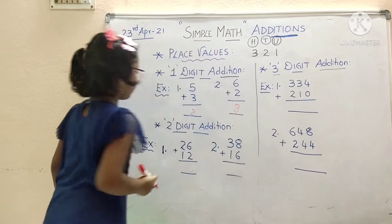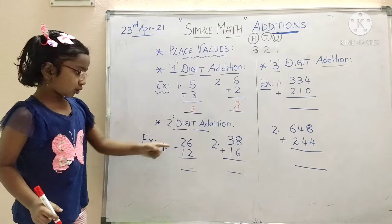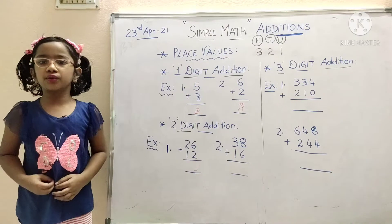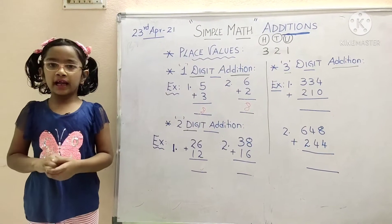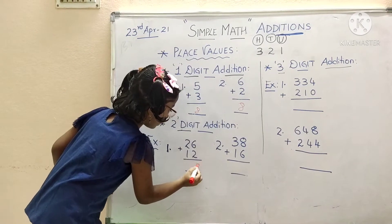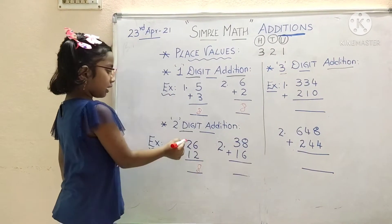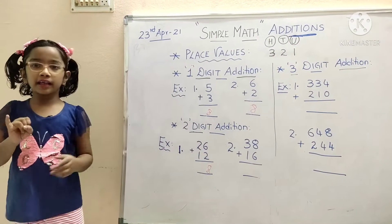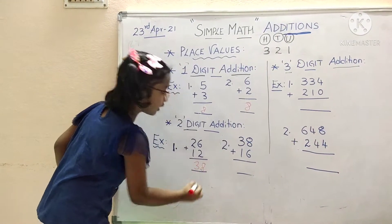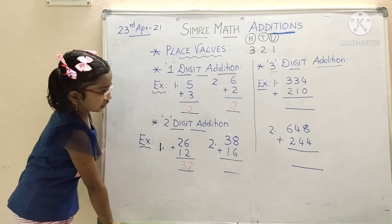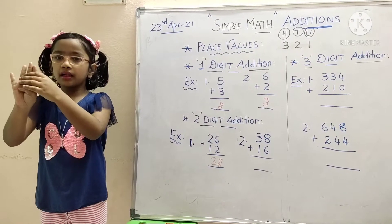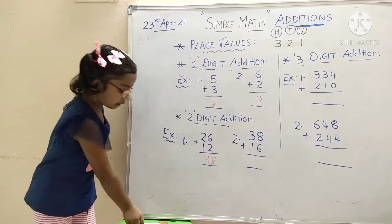Now let's start with two-digit additions. Twenty-six plus twelve. Bigger starts from units: six plus two — six in mind, two in hand — after six: seven, eight. The answer is eight. Next, tens: two plus one — two in mind, one in hand — three. The answer is three. So twenty-six plus twelve equals thirty-eight.